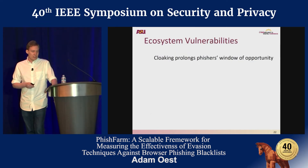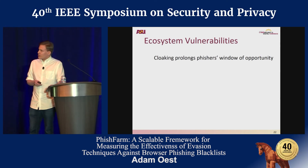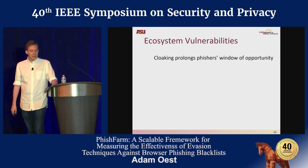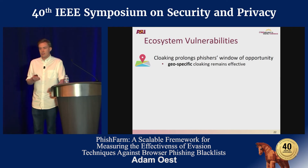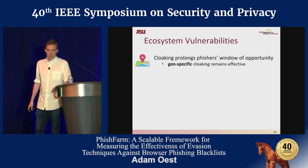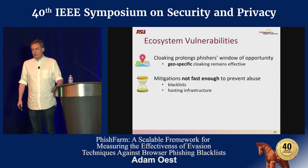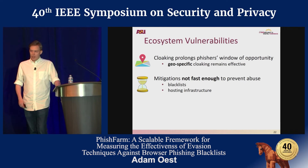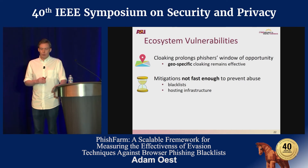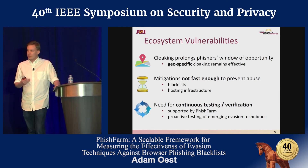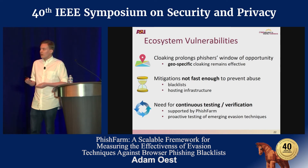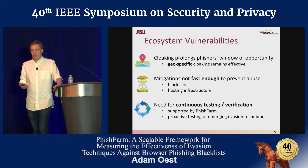Looking at the broader ecosystem, cloaking still prolongs the window of opportunity that phishers have. In particular, geo-specific cloaking — not even limited to the US, but limited to specific countries — is a legitimate concern for the anti-phishing ecosystem today. Our mitigations are not fast enough to prevent abuse, and both blacklist and hosting infrastructure are areas that could be improved. There is a need for continuous testing and verification of our defenses, which Phish Farm supports. It's a way for detecting that baseline mitigation — such as desktop and mobile — are both working as intended.